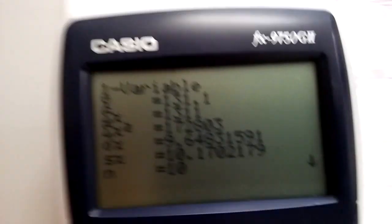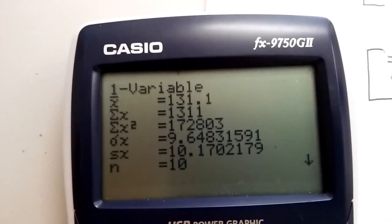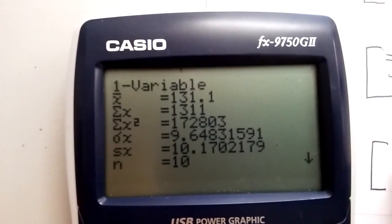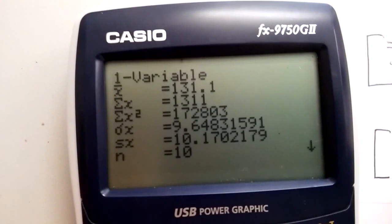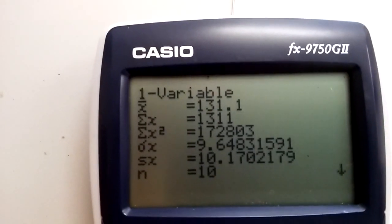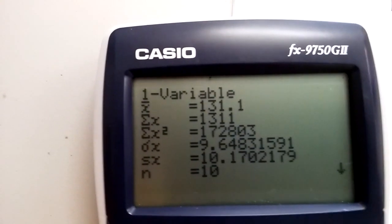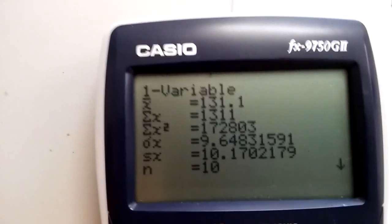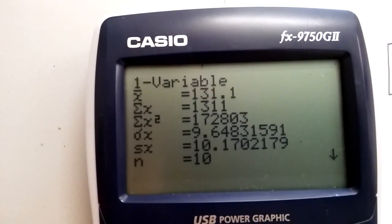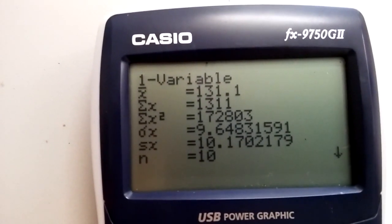Next, press 1 VAR. And we can read off the digits that we need. So we need X bar, which is 131. Plus and minus, the Z value isn't given here. Times S or the population standard deviation.